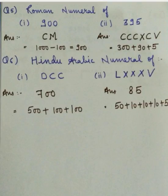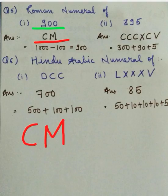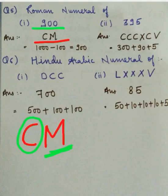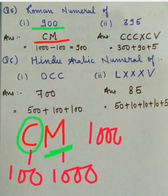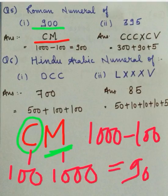Come back to the question now. We have to write the Roman numeral of 900. The answer is CM. Let's see how CM is the answer. The symbol C is written to the left of symbol M, which means the value of C will be subtracted from the value of M. This is one of the rules of writing Roman numerals. The value of M is 1000 and the value of C is 100. Since C is written left to M, 100 is subtracted from 1000, giving 900. That's how 900 is written as CM.